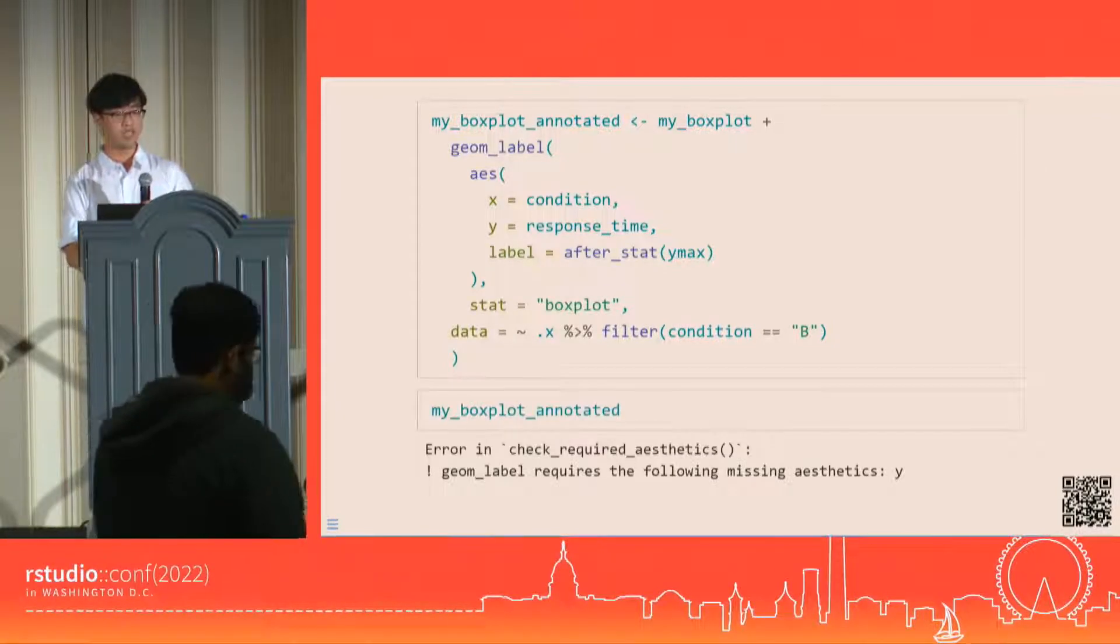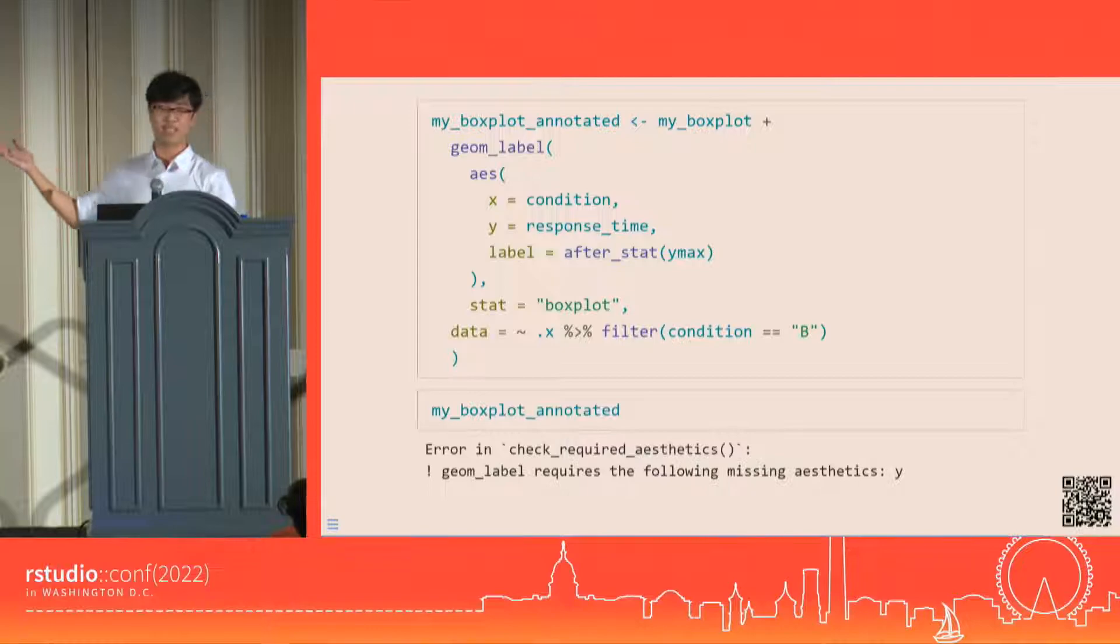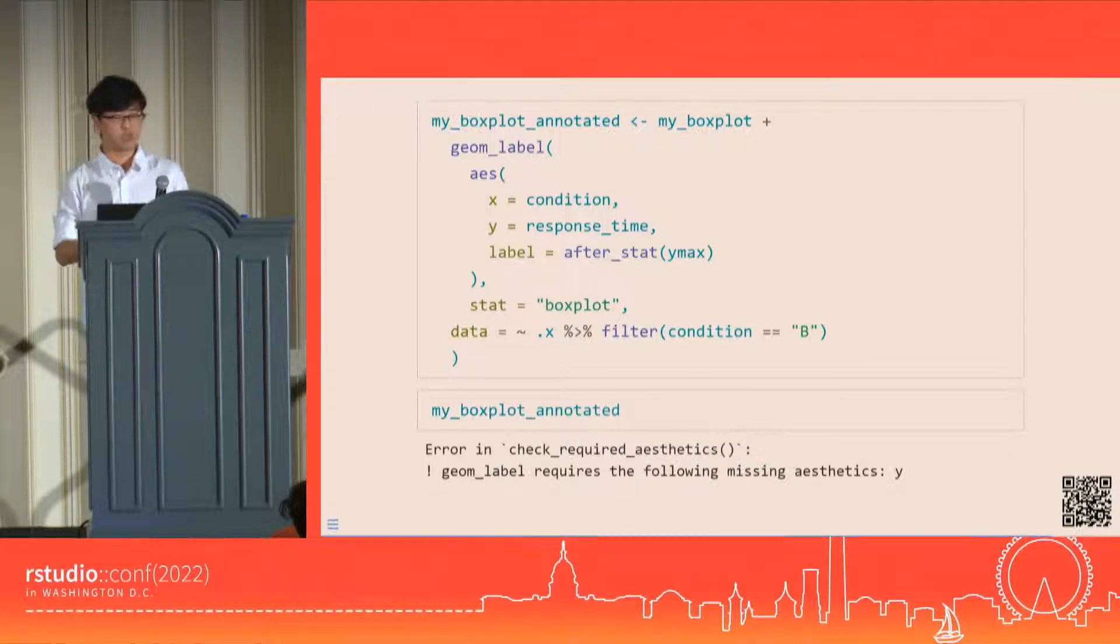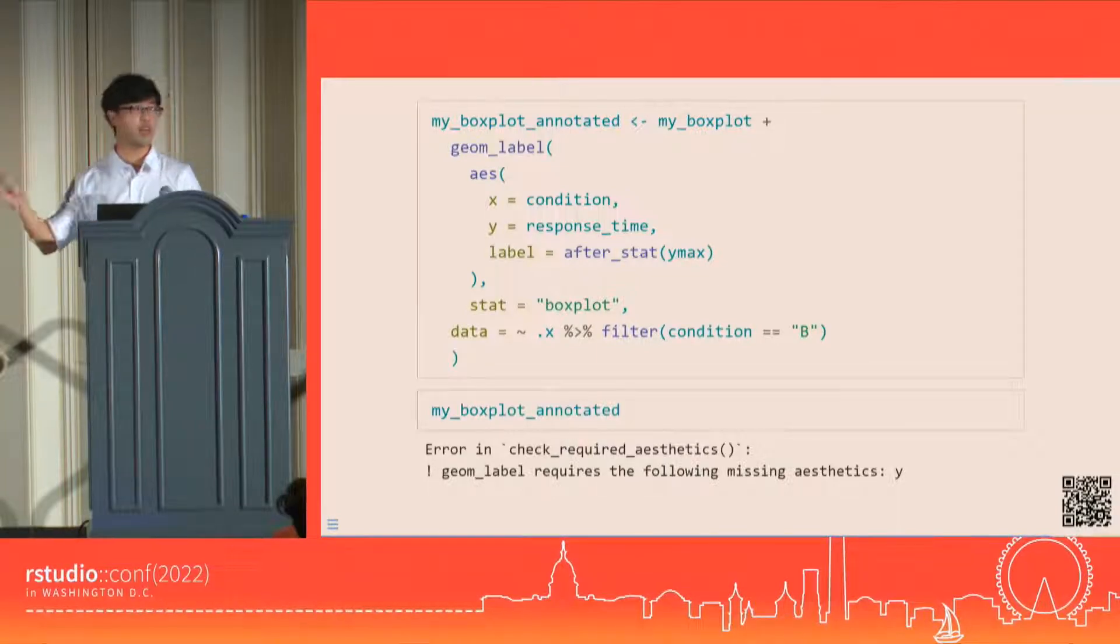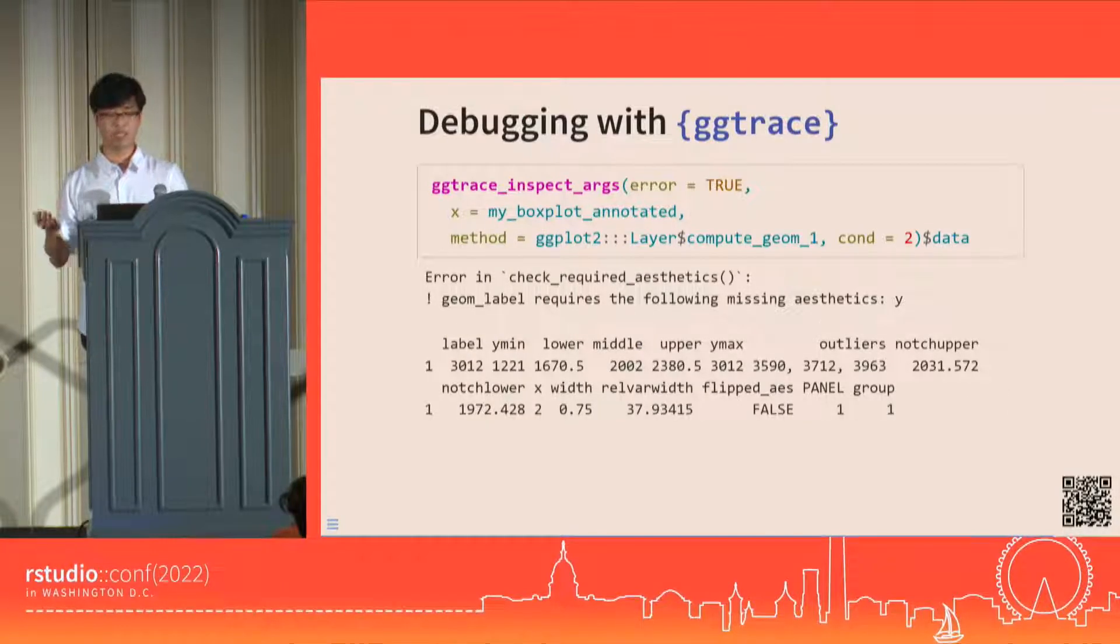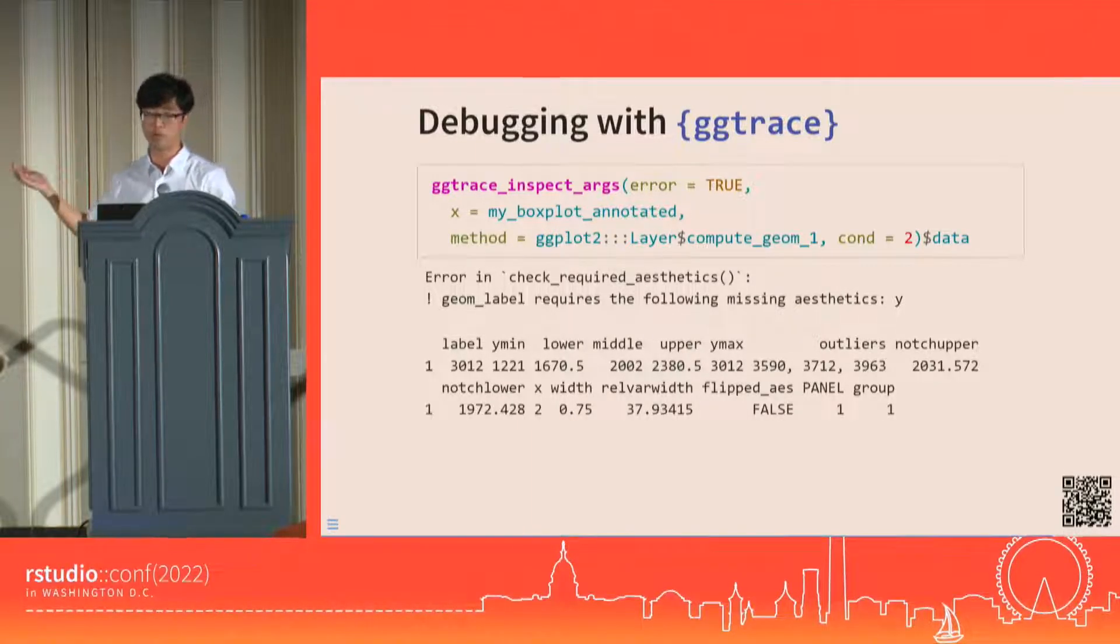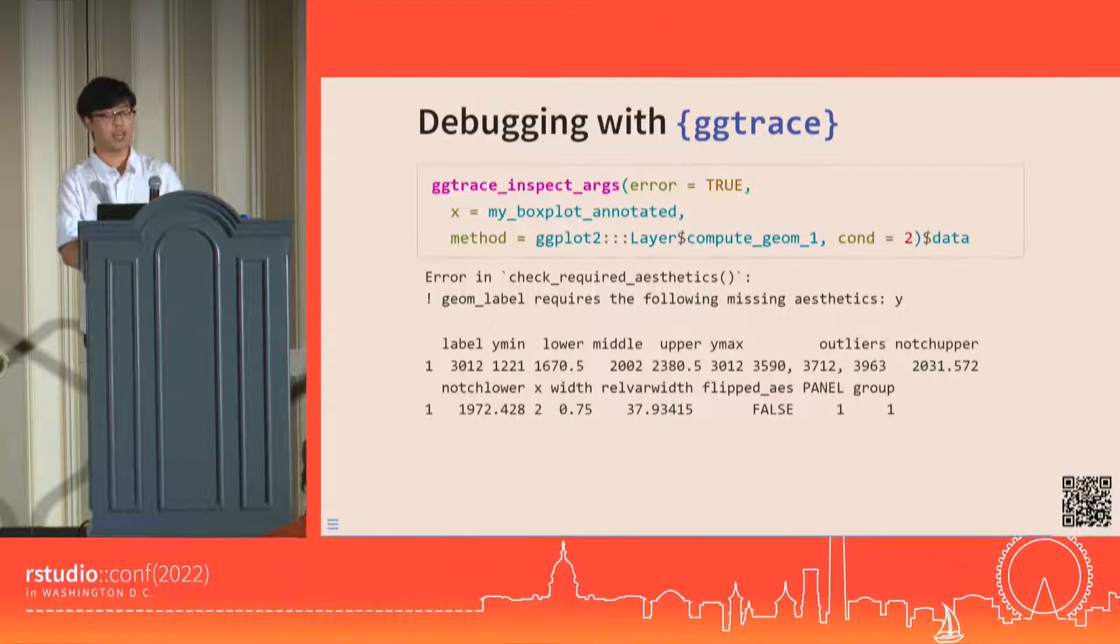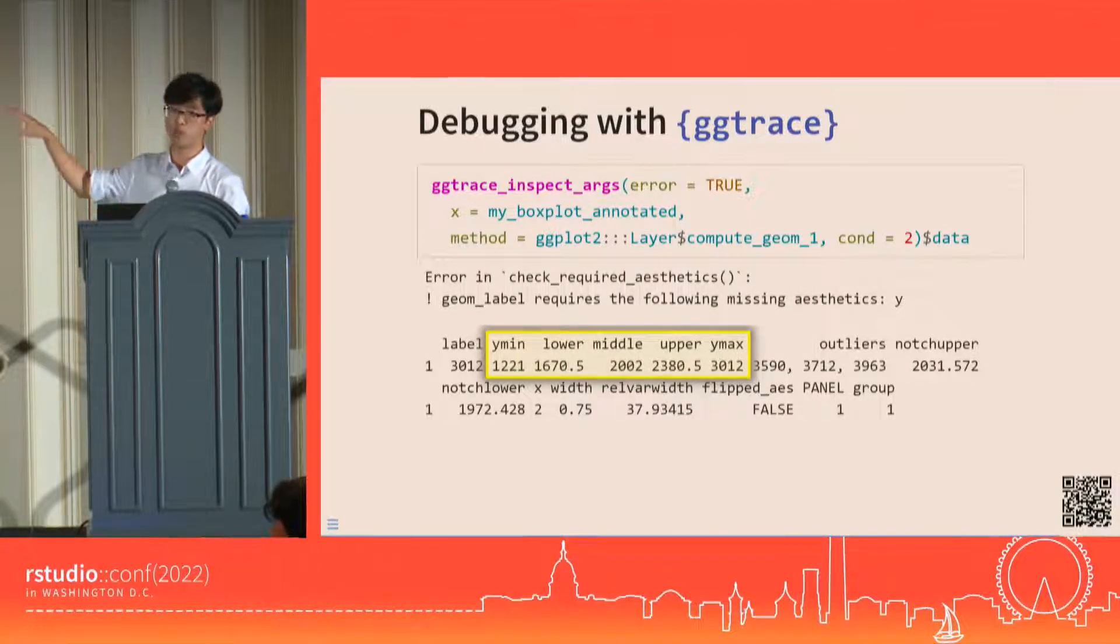What? We do have a y aesthetic here. Maybe we're not sure what's wrong, but we know how to debug this. The geom is complaining about a missing aesthetic, so something must be wrong with the data that it receives. We inspect the before geom snapshot of the layer's data, and we do see that the y column has been dropped. It turns out that the boxplot stat consumes the y column and then returns a summary across multiple columns like this. So the y column is missing now.